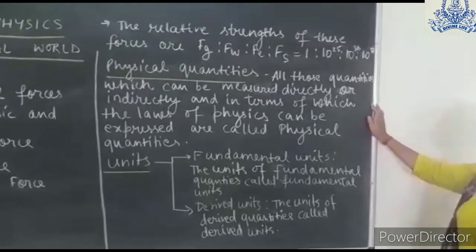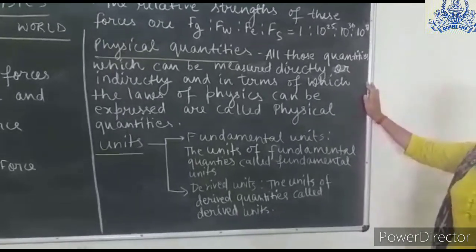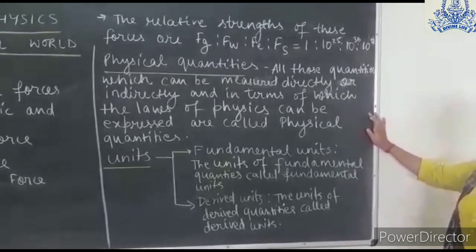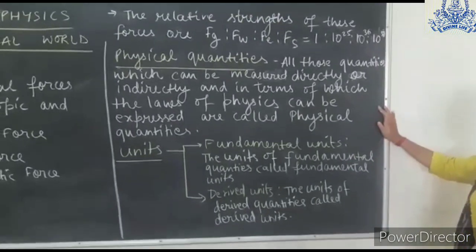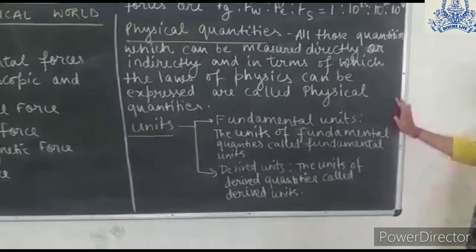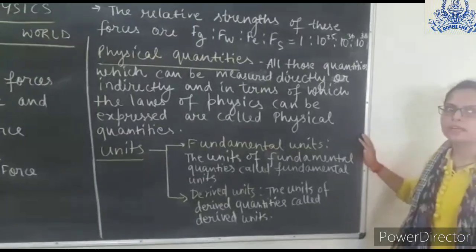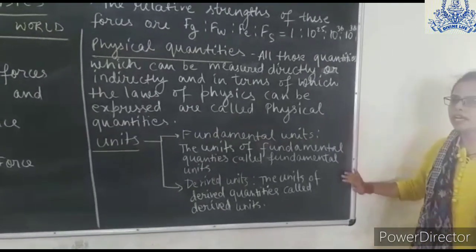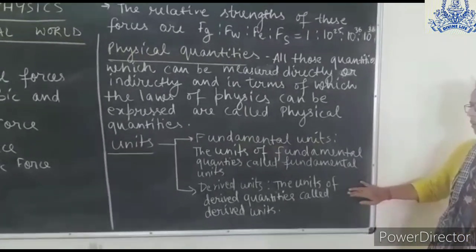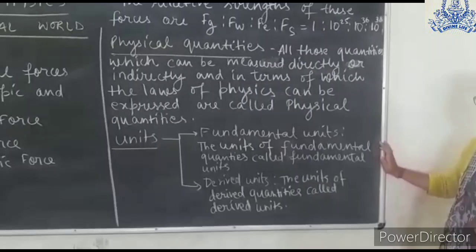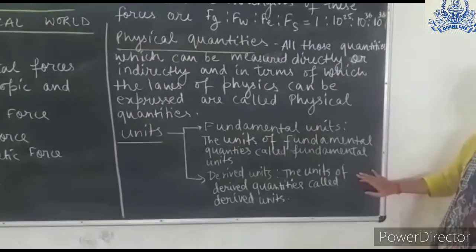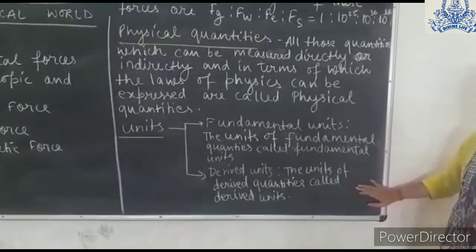What are physical quantities? Physical quantities are those quantities which can be measured directly or indirectly, and in terms of the laws of physics they can be expressed. Physical quantities are subcategorized: the units are categorized into two parts — Fundamental Units and Derived Units. The units of fundamental quantities are known as Fundamental Units and the units of derived quantities are known as Derived Units.